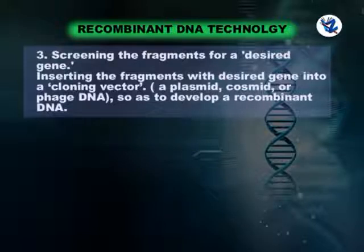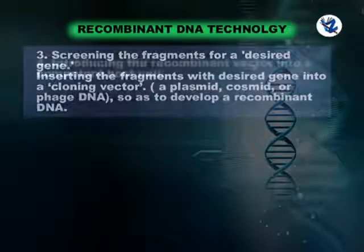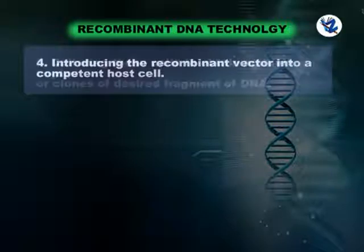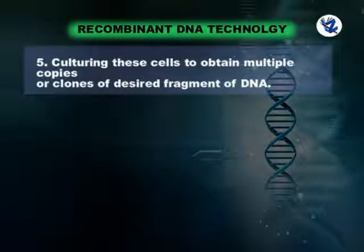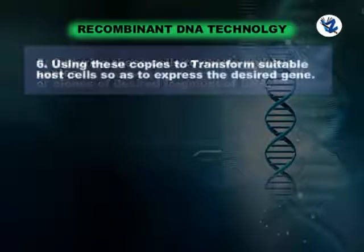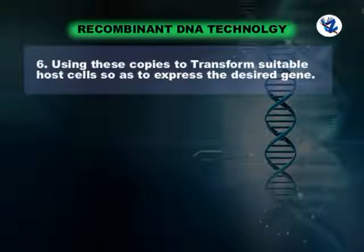A cloning vector may be a plasmid, cosmid, or phage DNA, so as to develop a recombinant DNA. Then introducing the recombinant vector into a competent host cell, and culturing these cells to obtain multiple copies or clones of the desired fragment of DNA, then using these copies to transform suitable host cells so as to express the desired gene.